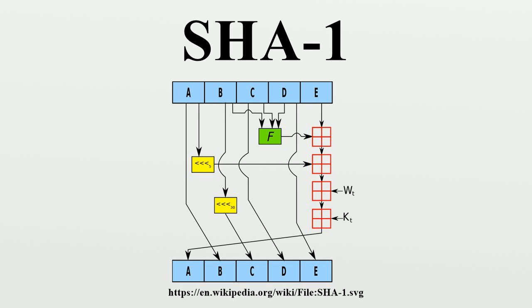For a hash function for which L is the number of bits in the message digest, finding a message that corresponds to a given message digest can always be done using a brute-force search in approximately 2^L evaluations. This is called a pre-image attack and may or may not be practical depending on L and the particular computing environment. Finding two different messages that produce the same message digest — a collision — requires on average only about 1.2 times 2^(L/2) evaluations using a birthday attack. Thus SHA-1 was originally thought to have 80-bit strength.